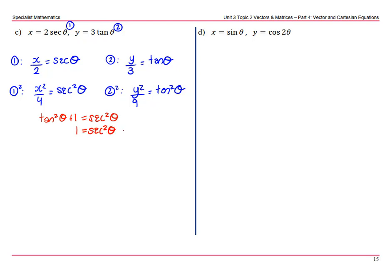So if we look at our two equations, you should be able to see if we label them 3 and 4, that in order to use this trig identity, we need to go equation 3 minus equation 4. So that gives us x squared over 4 minus y squared over 9 equals, and we get that sec squared theta minus tan squared theta, which we can then replace. So we get x squared over 4 minus y squared over 9 equals 1.